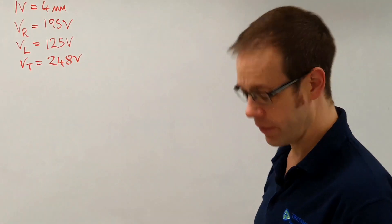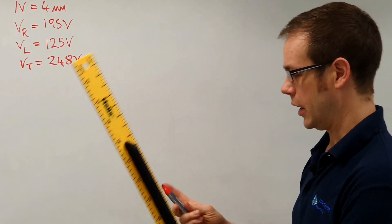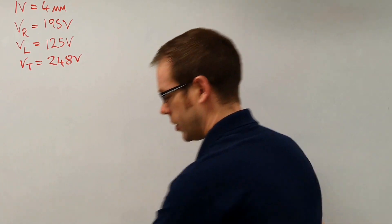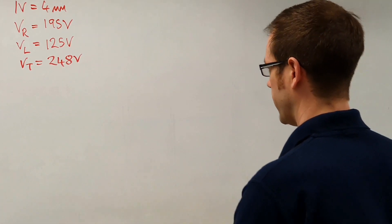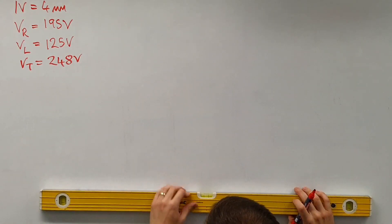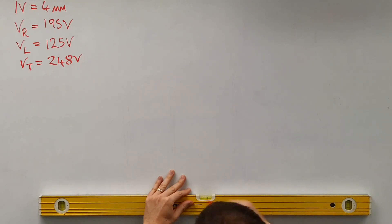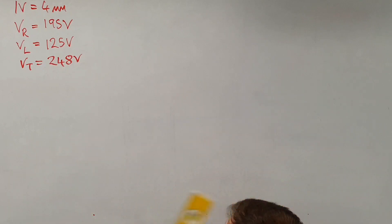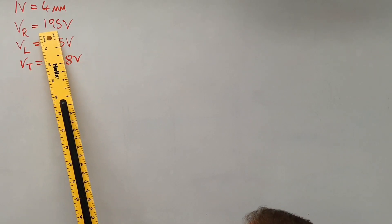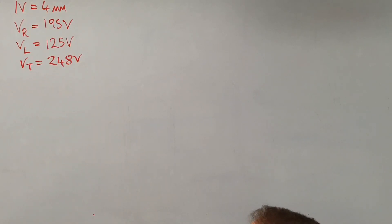In order to help me achieve that I'm just going to first of all use my spirit level to get a nice level line at the bottom here and then we'll measure it up and make sure it's the right size. So we are going to do a line that matches up with these points here so it's nice and level. Now my resistive voltage is 195 volts so I need to do 195 times by 4 and that's going to give us 780, so that's 78 centimeters.